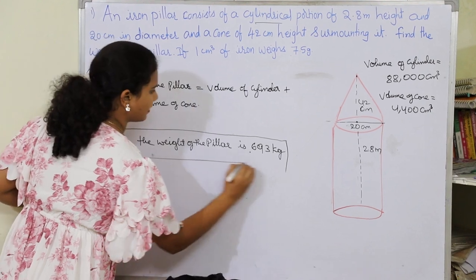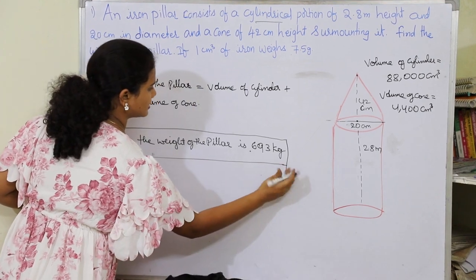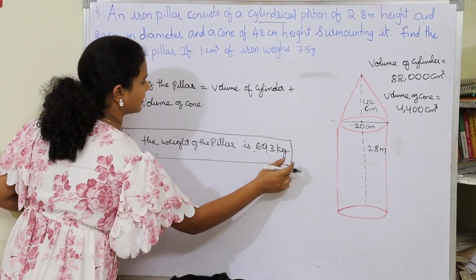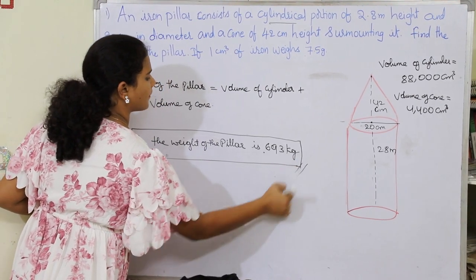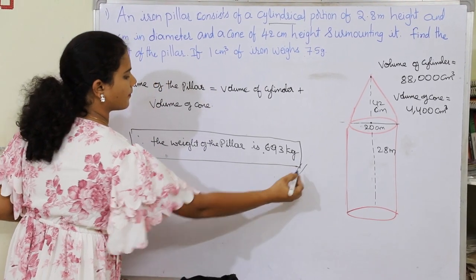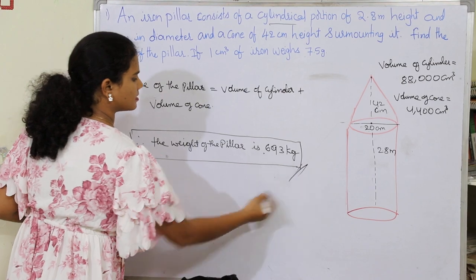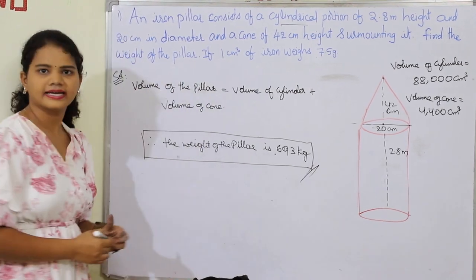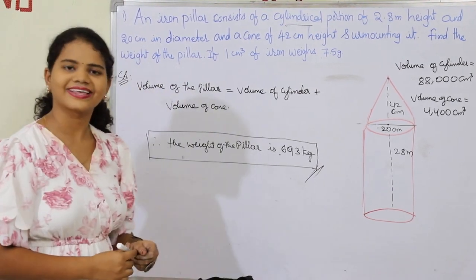So the weight of the given pillar is 693 kg. Thank you.